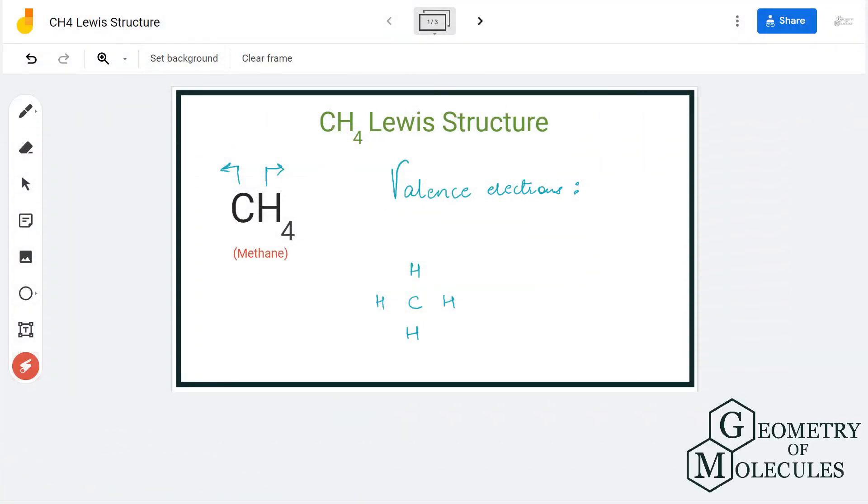Hi guys, today in this video we are going to look at the Lewis structure for CH4, the chemical formula for methane. It is made up of one carbon atom and four hydrogen atoms. To understand its Lewis structure, we will first need to know the total number of valence electrons.